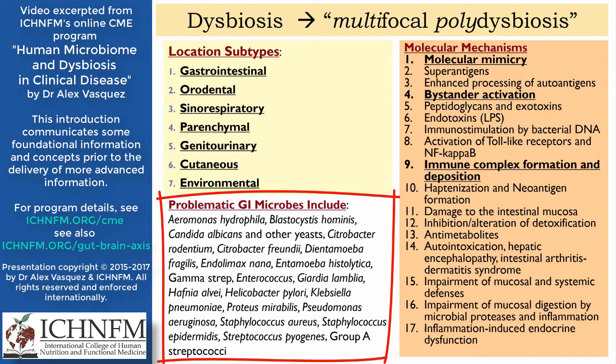In the bottom left of this slide, I've listed some problematic GI microbes that I've seen in my own clinical practice. These include Aeromonas hydrophila, Blastocystis hominis, Candida albicans and other yeast, Citrobacter freundii, Dientamoeba fragilis, Endolimax nana, Entamoeba histolytica, Gamma strep, Enterococcus, Giardia lamblia, Hafnia alvei, Helicobacter pylori, Klebsiella pneumoniae, Proteus mirabilis, Pseudomonas aeruginosa, Staphylococcus aureus, Staphylococcus epidermidis, Streptococcus pyogenes, and other group A streptococci.